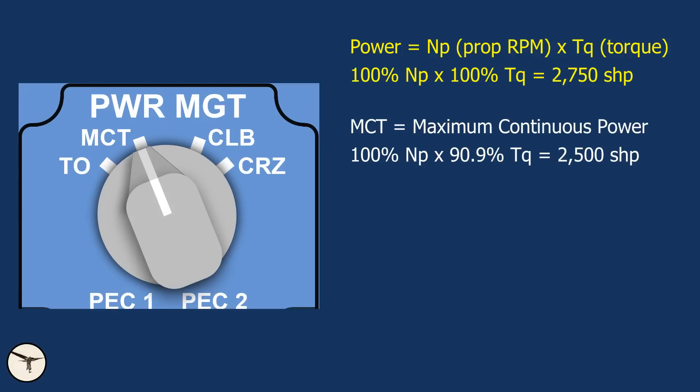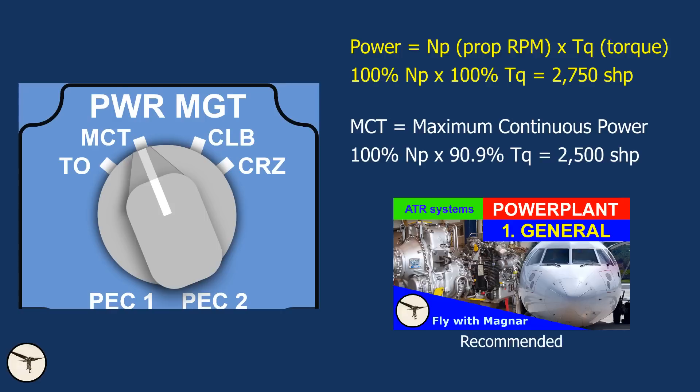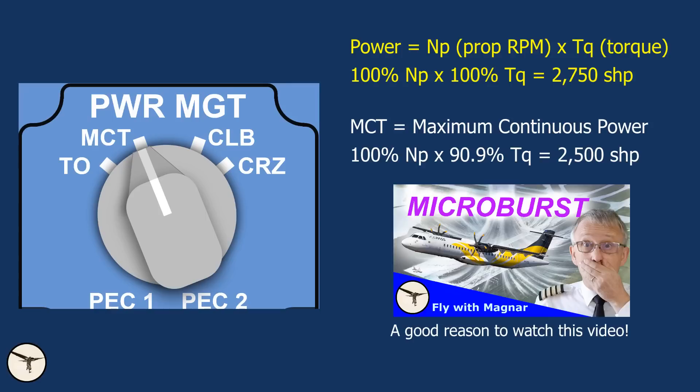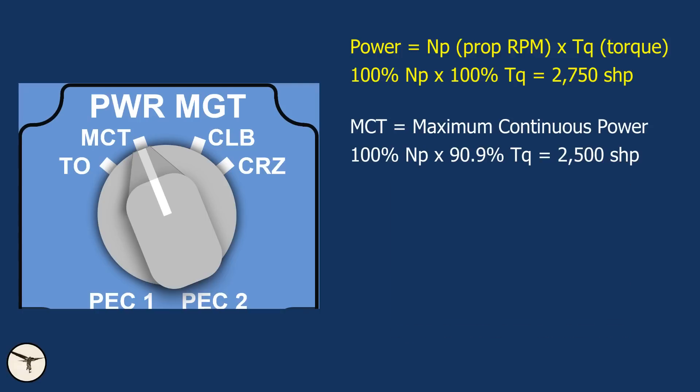The second position is MCT — maximum continuous thrust. Well, it should be power, because thrust is used for turbofan engines, while we use power on a turboprop. But just for commonality we say MCT, because most pilots are already familiar with that. MCT is used in an emergency like engine failure or when encountering wind shear. It gives 100% NP, propeller speed, and 90.9% torque.